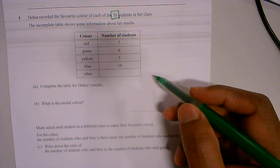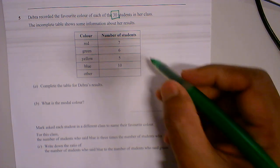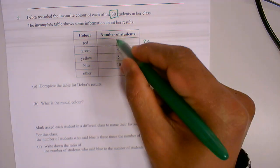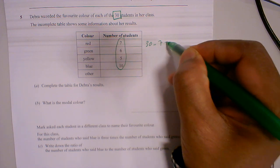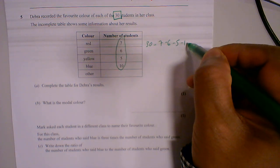So all we're going to do now is we're going to do 30 take away all of these numbers. Take away 7, take away 6, take away 5, take away 10.